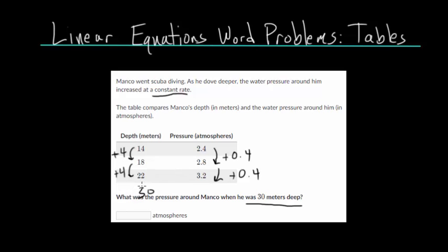So going from 22 to 26, we're adding another 4, so we'd add another 0.4 here. This would be at 3.6. And then going from 26 to 30, we're adding another 4, which means we would add another 0.4 here. So this would bring it up to 4.0 atmospheres of pressure at 30 meters deep.